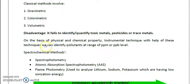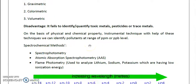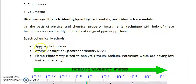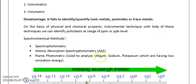We will now talk about spectrochemical methods, specifically spectrophotometry — including AAS, which is Atomic Absorption Spectrophotometry, basically used for heavy metals — and flame photometry, which is used for analyzing Group 1 and Group 2 elements having low ionization energy, such as lithium, sodium, and potassium.